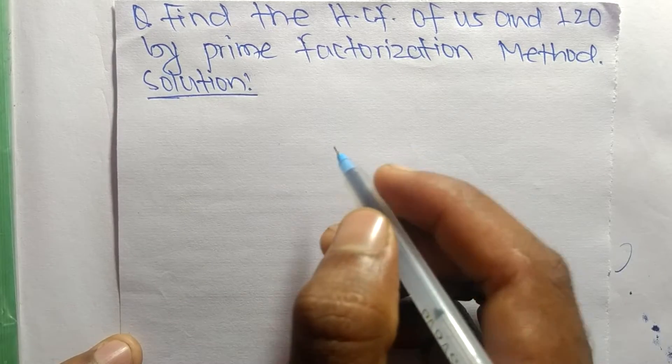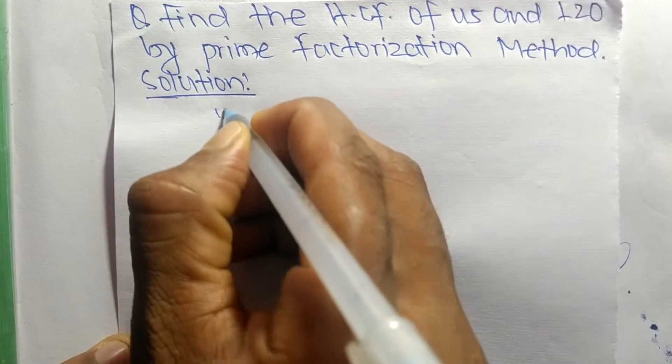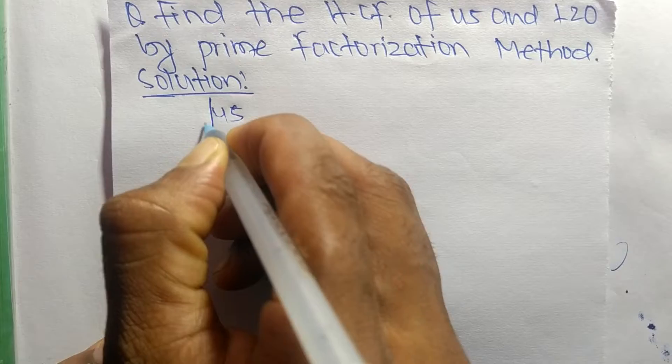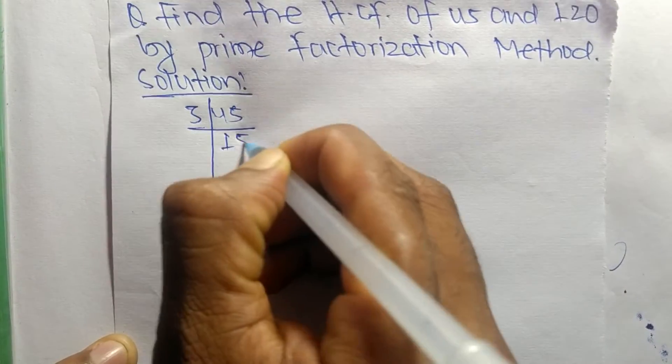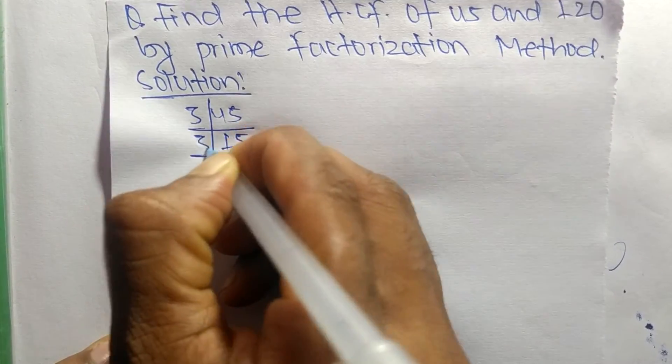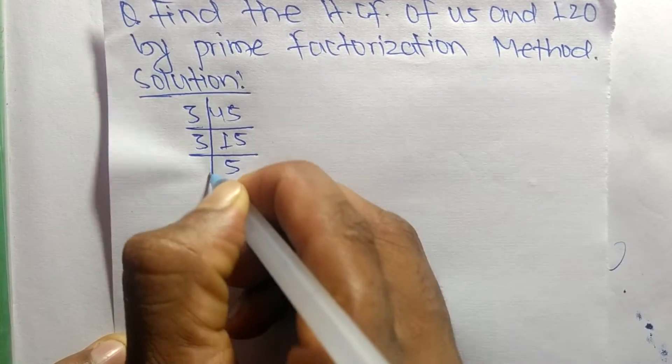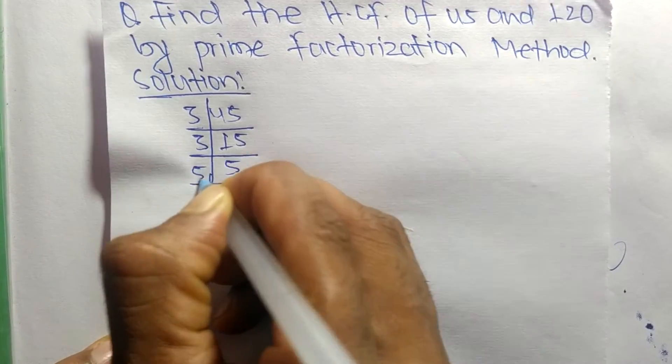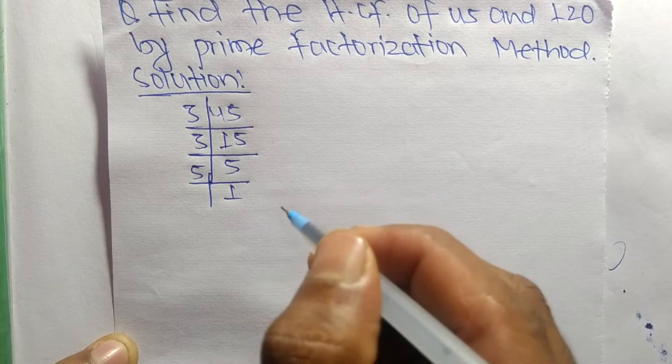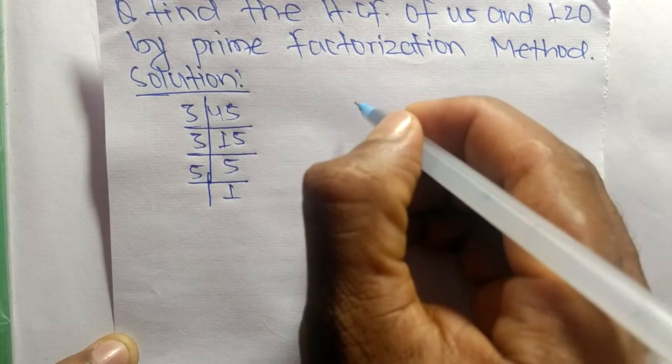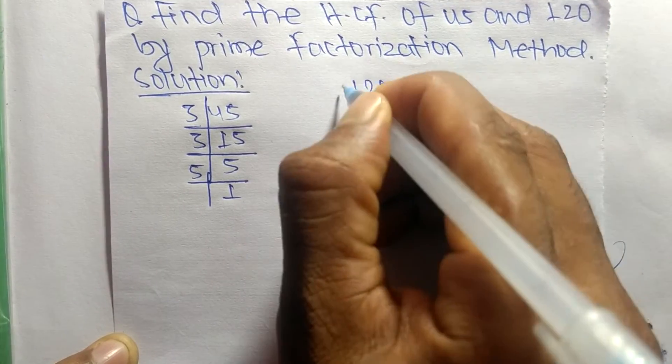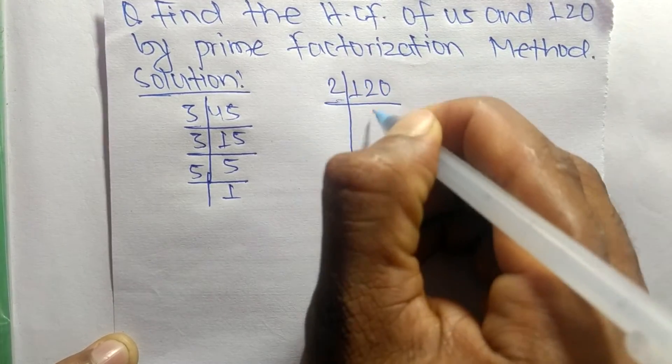First, we find out the prime factors of 45. So it is 3 times 15 equals 45, 3 times 5 equals 15, and 5 times 1 equals 5. Likewise, the prime factors of 120 are: it is 2 times 60 equals 120...